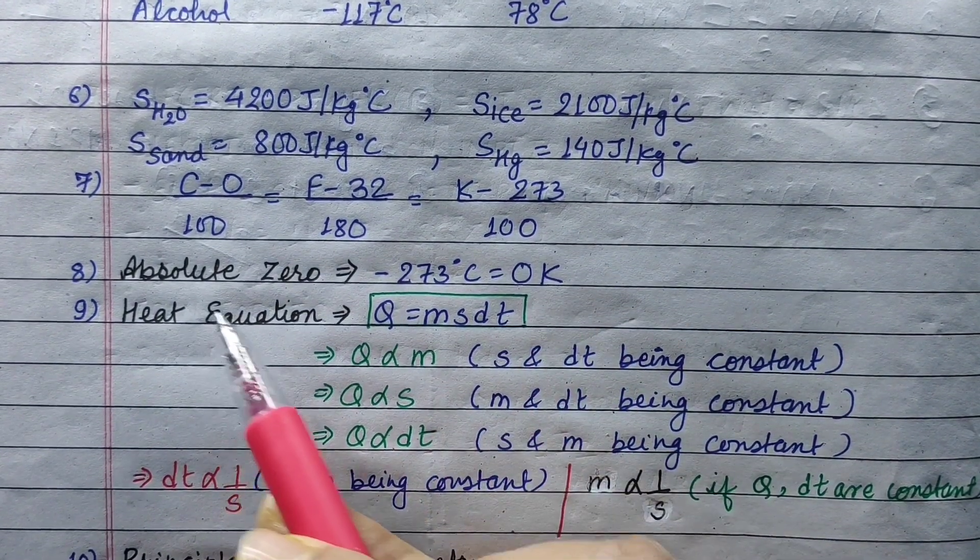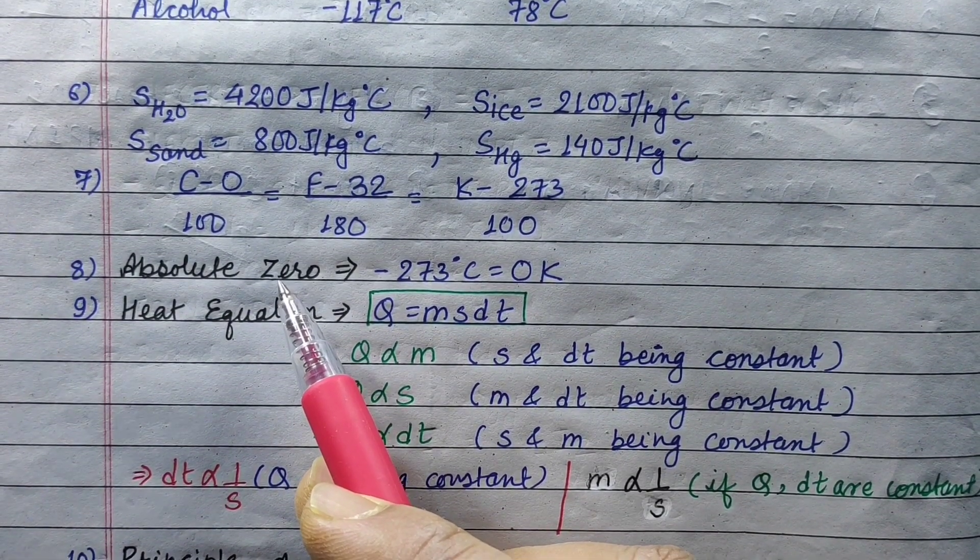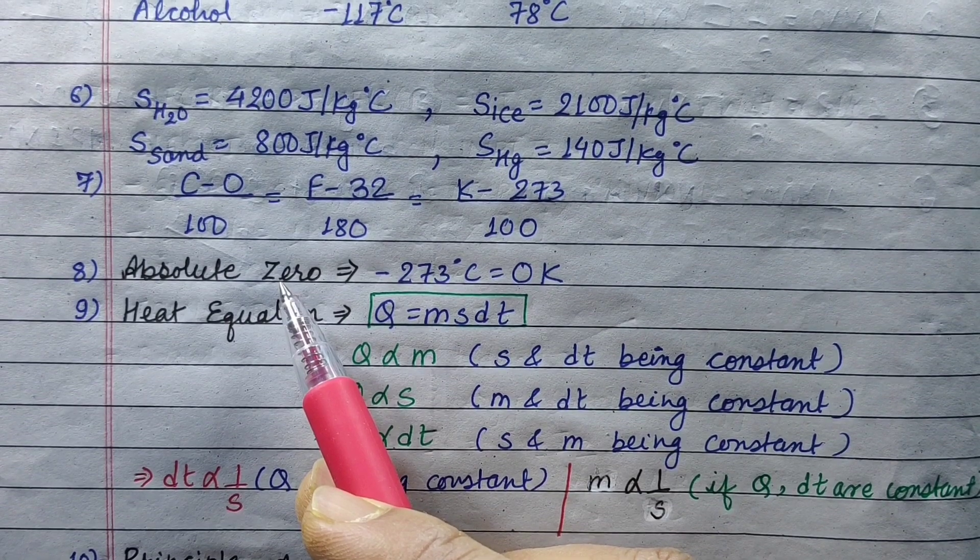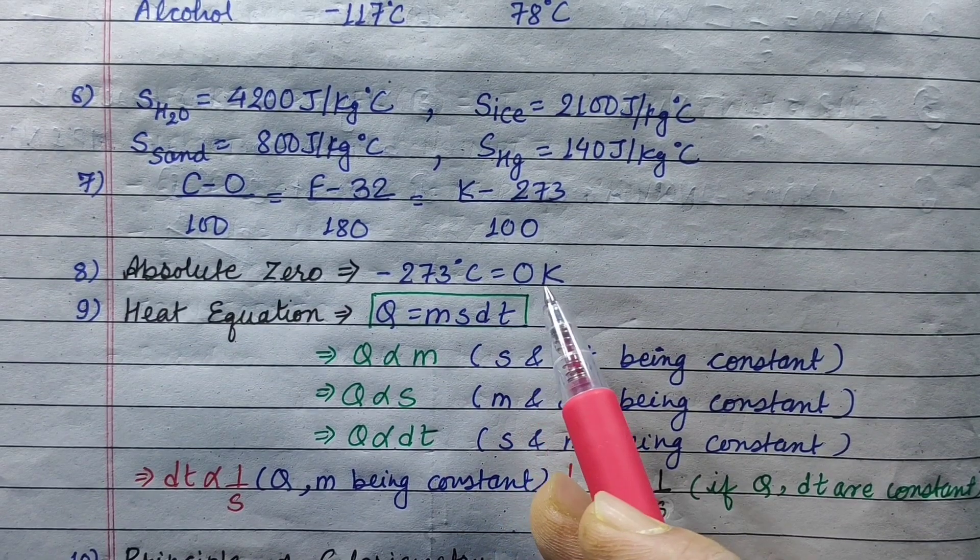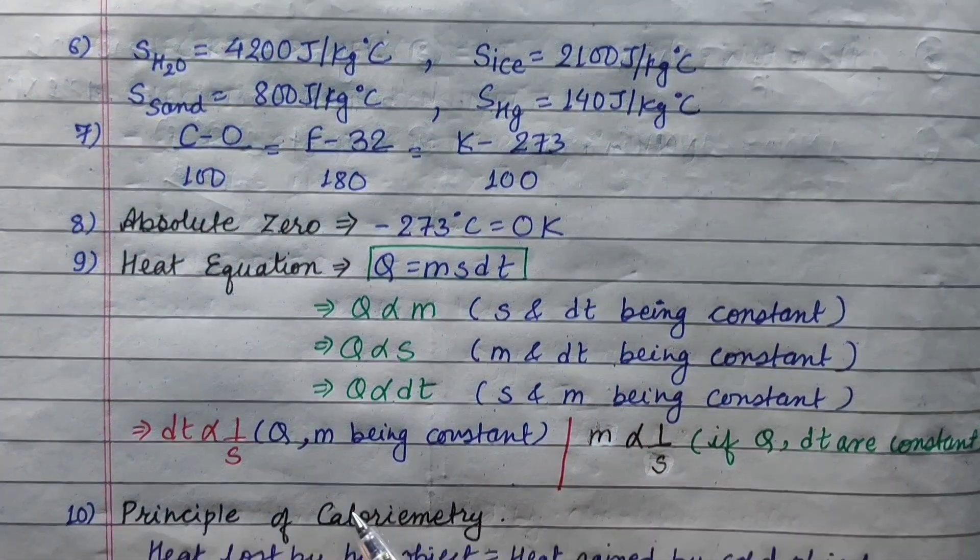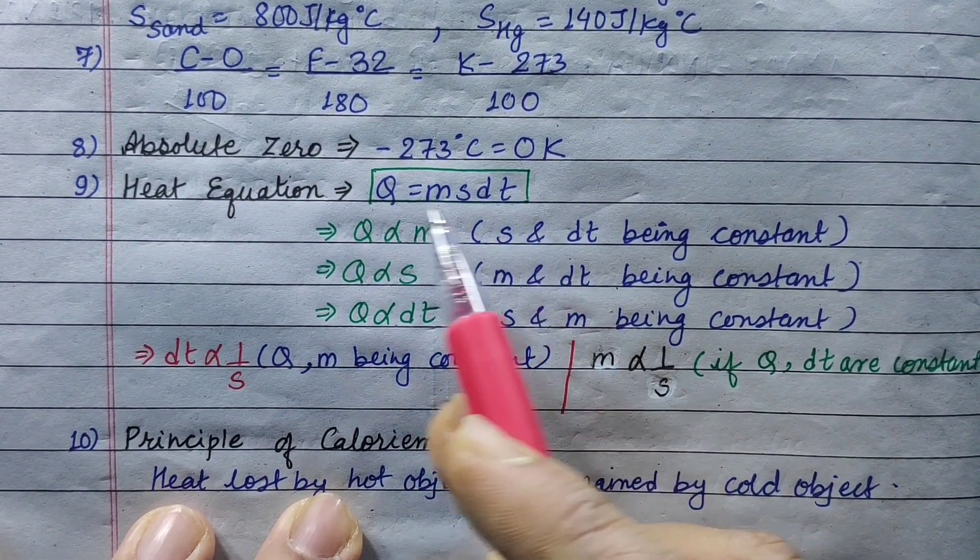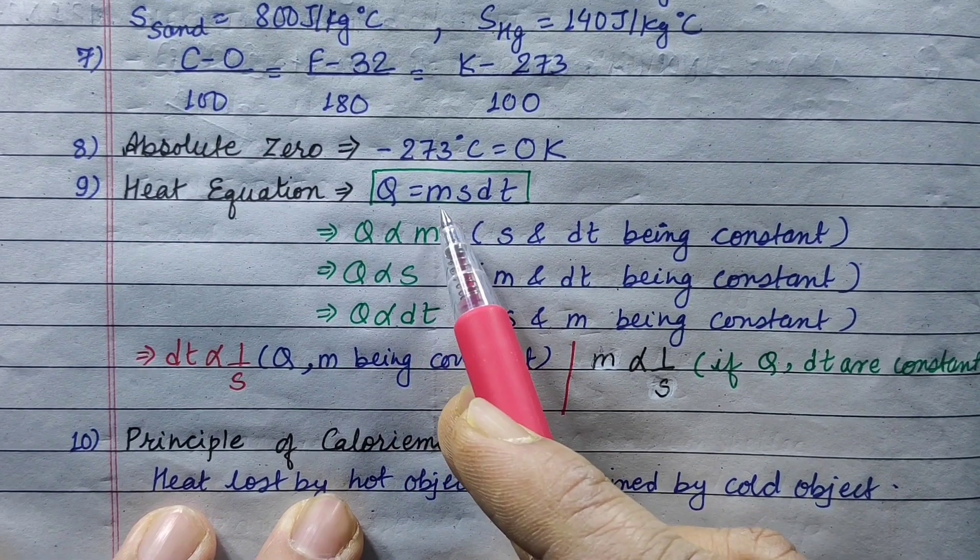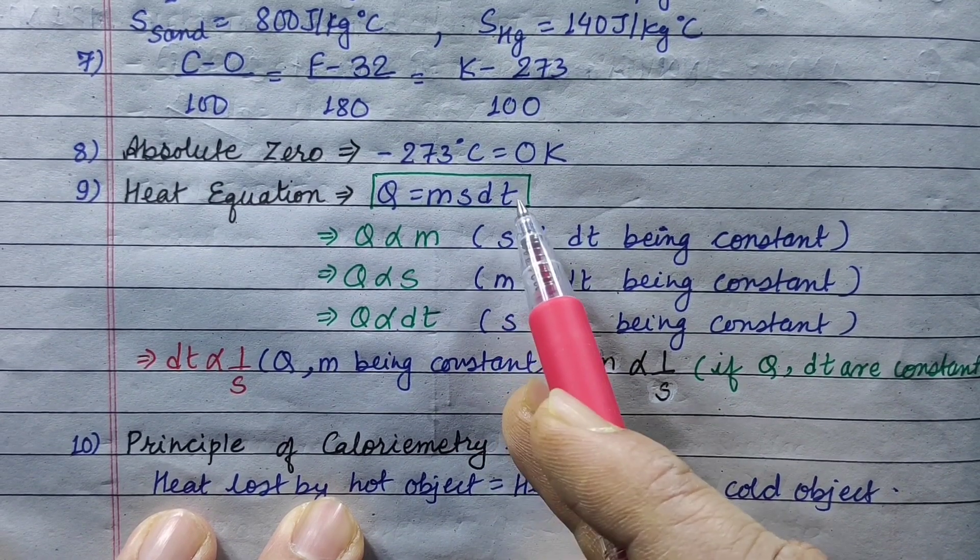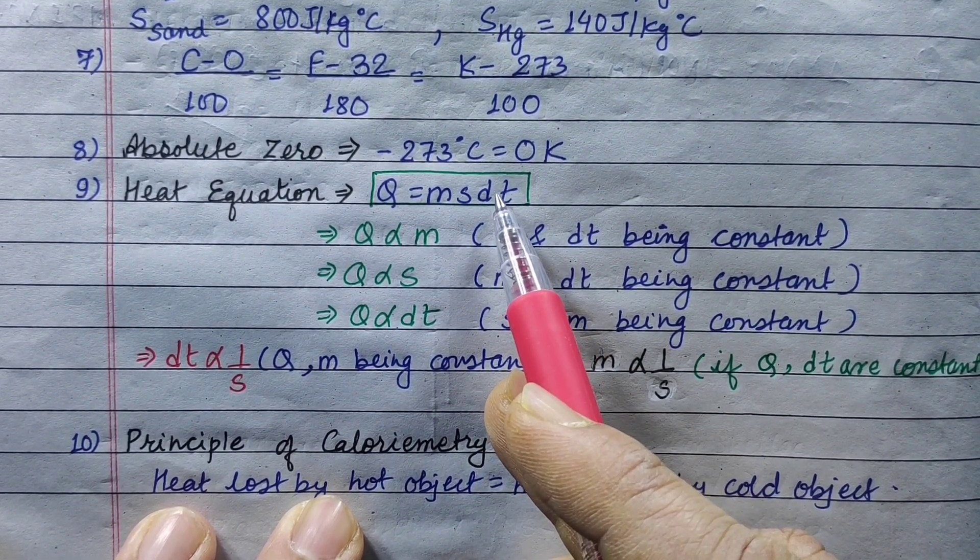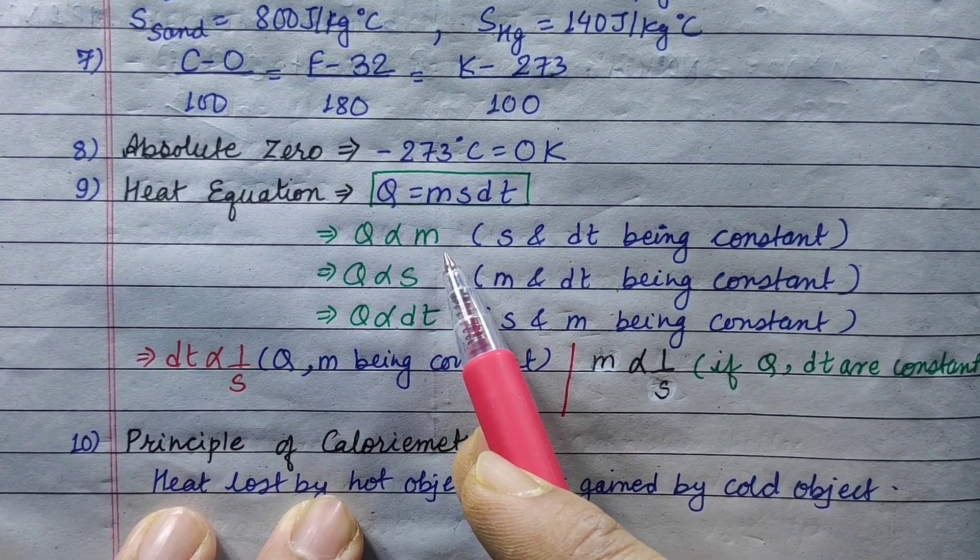Absolute zero is that temperature with the least possible energy. It is minus 273 degrees Celsius or 0 Kelvin. Heat equation: Q equals msdT, where Q is heat energy, m is mass of the substance, s is specific heat capacity, and dT is change in temperature.